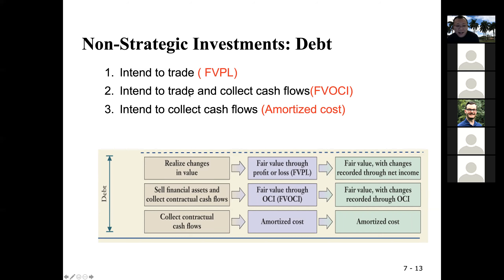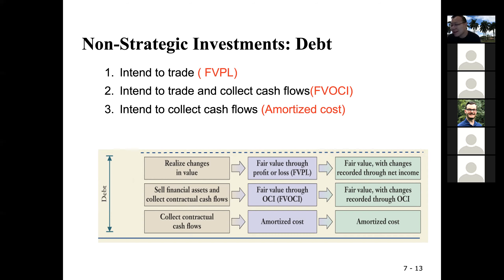If the intention is to trade and collect cash flows — for example, certain debt like bonds give you interest payments. Periodically they give you coupons that you can redeem for interest payments. So that's the cash flow to you. If your intention is that you're ready to trade it at any time, but at the same time you also hold it to collect all these cash flows — dividends, interest — then put it into the fair value other comprehensive income category.